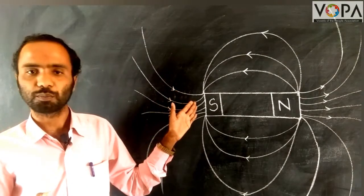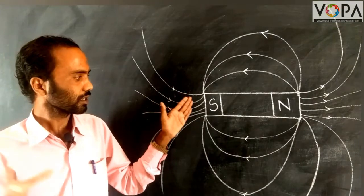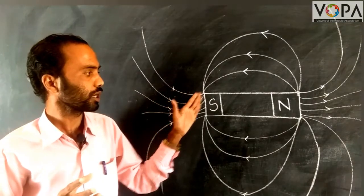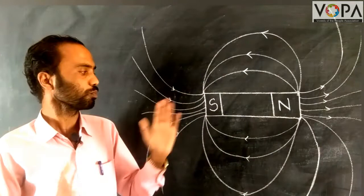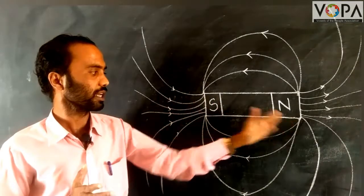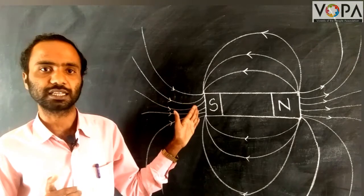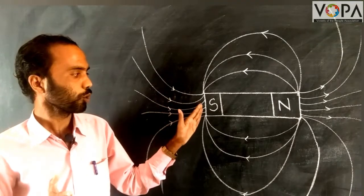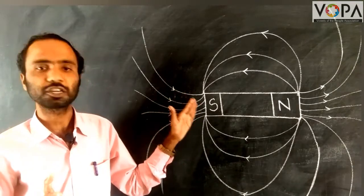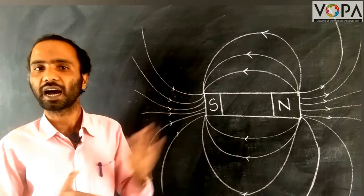Most of the magnetic lines of force get collected at the pole region of the magnet, and that's why at the pole region, the intensity of the magnet is very high.